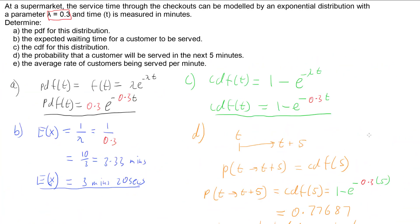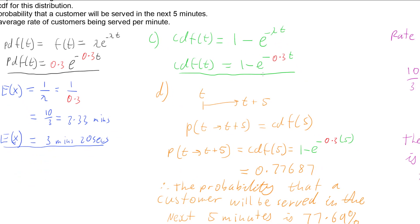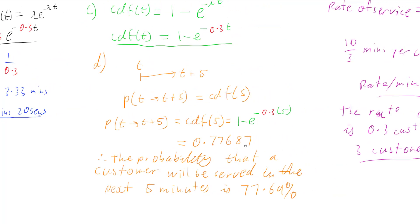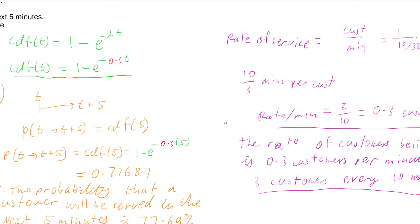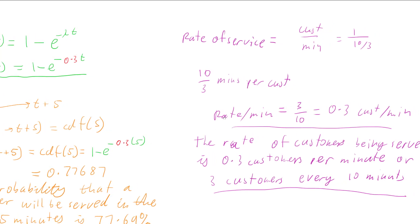So there we go. We know the probability density function PDF is lambda e to the negative lambda t. The expected value is 1 on lambda. The cumulative distribution function is 1 minus e to the negative lambda t, which is useful for giving us the probability from a starting time to a next interval — what's the probability that something will happen within there. And we can use this information to also evaluate rates of things happening.